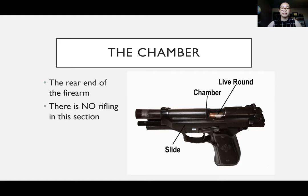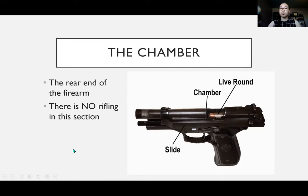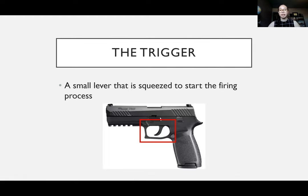The chamber is the rear end of the firearm — this is where cartridges are stored until they're ready to be fired, and there is no rifling in this section. Lastly, the trigger is the lever that you pull in order to start the firing process and initiate the cycle of fire.